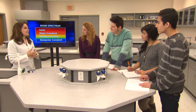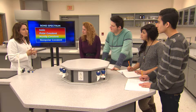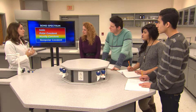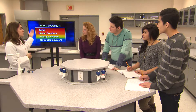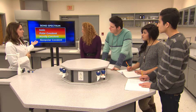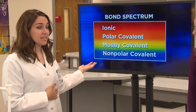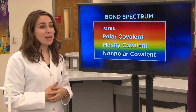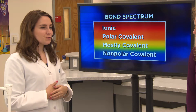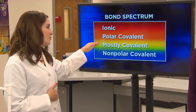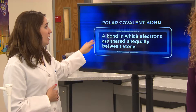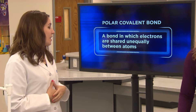Remember earlier how we said it's more accurate to think of different types of bonds as falling along a spectrum as opposed to being one specific type? Well, let's explore a type of bond that falls right in the middle of that bond spectrum: a polar covalent bond.